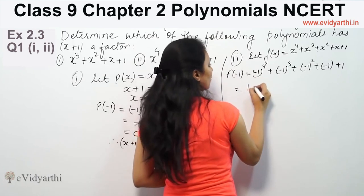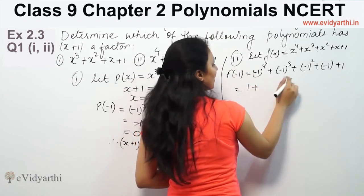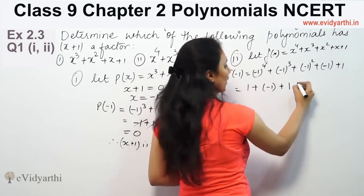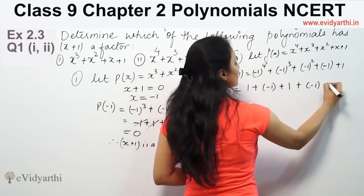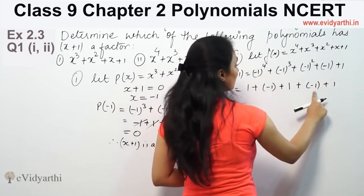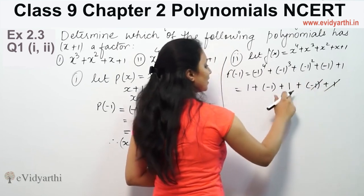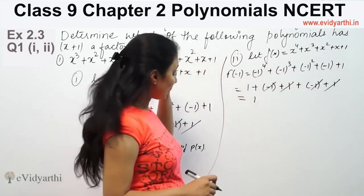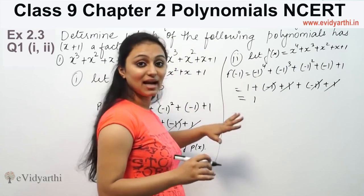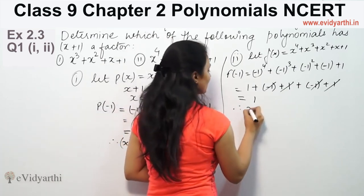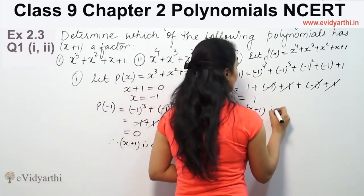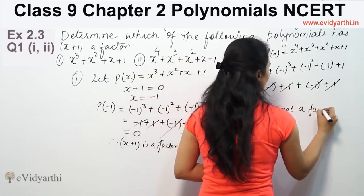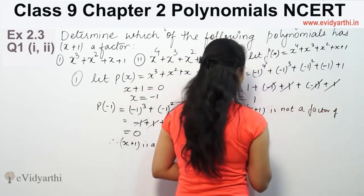Minus 1 to the power 4 is 1, minus 1 cubed is minus 1, minus 1 squared is 1, then plus minus 1 plus 1. Positive 1 and negative 1 cancel, positive 1 and negative 1 cancel, leaving plus 1. The answer is 1, which means x plus 1 is not a factor of f(x).